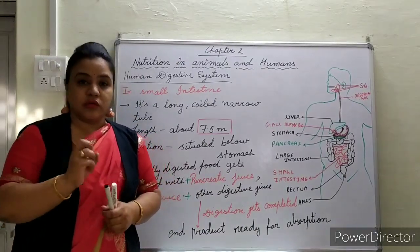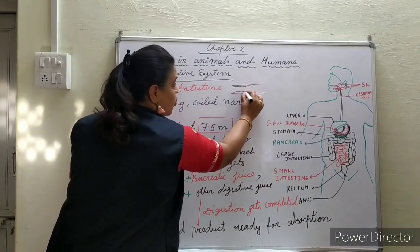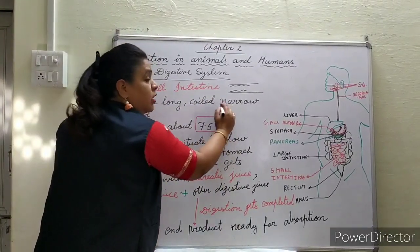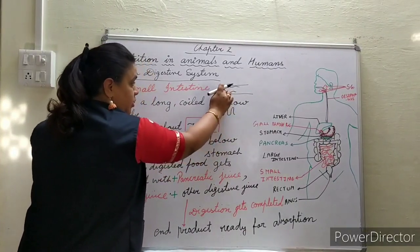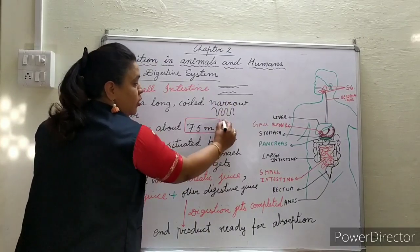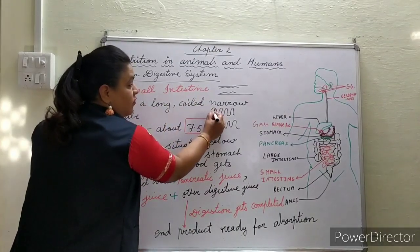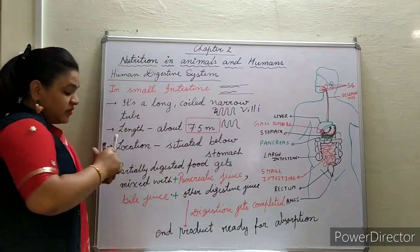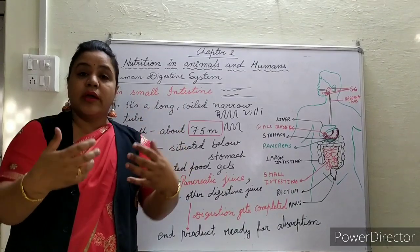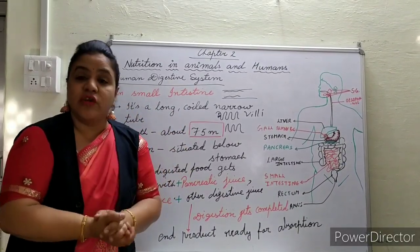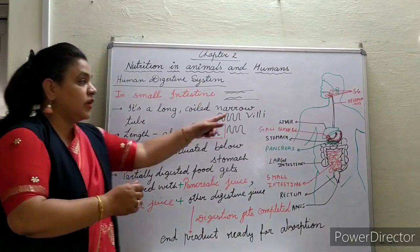When we look at the detailed structure of the small intestine, we find that the inner lining has infoldings on both sides. These infoldings have small finger-like projections known as villi. The inner wall of the small intestine has these finger-like projections. The purpose of the villi is to increase the surface area for absorption.